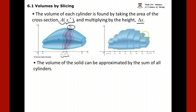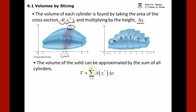So the volume of the solid can be approximated by the sum of all these cylinders. In this picture we have seven cylinders, so we find the volume of each and add them up to approximate the total volume. Using the summation symbol with n equal to seven, we add up the area of each cross section multiplied by delta X.